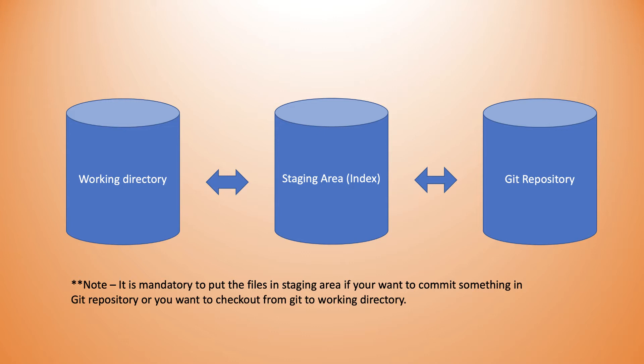The staging area is nothing but an intermediate step between the working directory and the git repository. If you want to push something to a git repository from the working directory, it has to pass through the staging area — that is a mandatory step which we cannot skip. We'll see in detail why the staging area is required in coming sessions. It is required for anything going from working directory to git repository, and also from git repository to working directory — if you want to check out something, it has to pass via staging area as well.